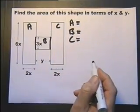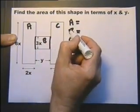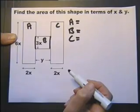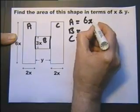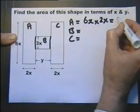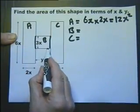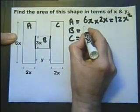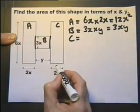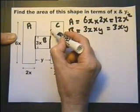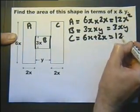The area of A is 6x times 2x, which is 12x². The area of B is 3x times y, which is 3xy. And the area of C is also 6x times 2x, which is 12x². So that gives the area of that part.